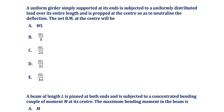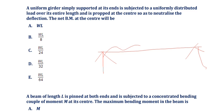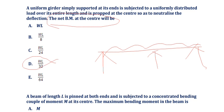A uniform girder simply supported at its ends is subjected to a uniformly distributed load over its entire length and is propped at the center so as to neutralize the deflection. The net bending moment at the center is WL/32. Option D is the correct answer.